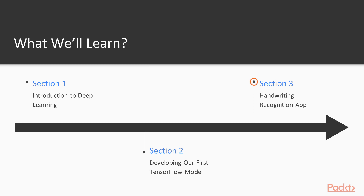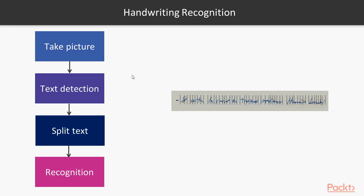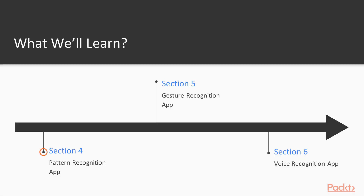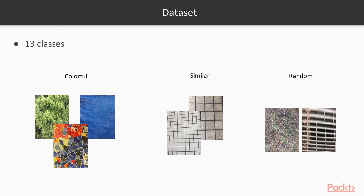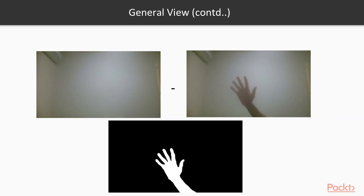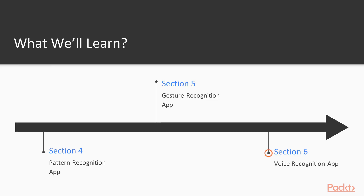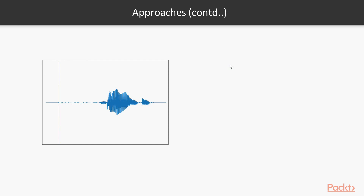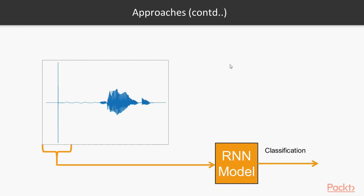In the third section, we will develop a model to perform handwritten recognition and we will deploy it in an Android app. In the fourth section, we will perform pattern recognition to distinguish between different textures. In the fifth section, we will build a simple gesture recognition model. And finally, in the last section of this course, we will create a voice command recognition model using convolutional neural networks.